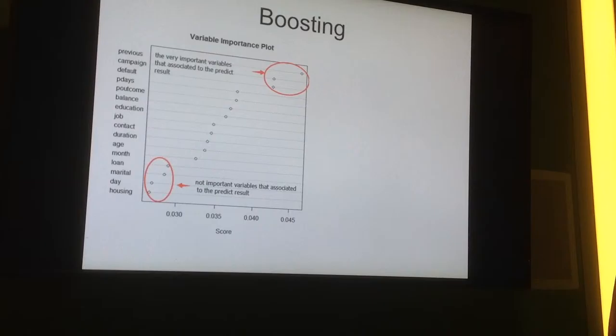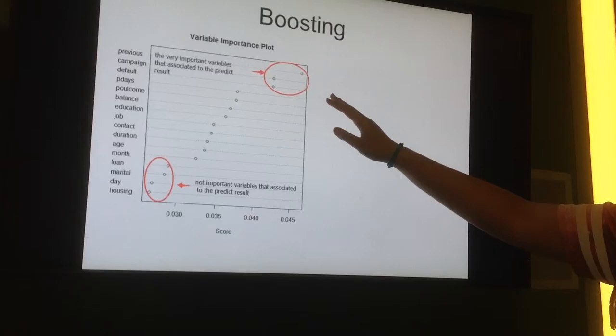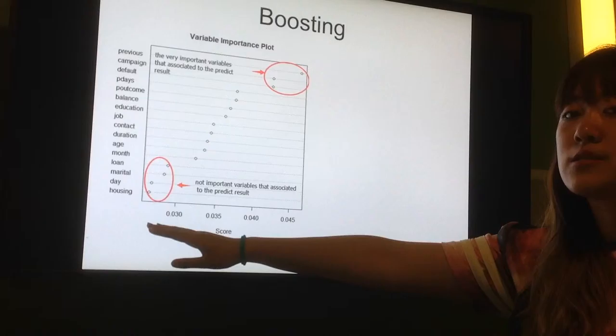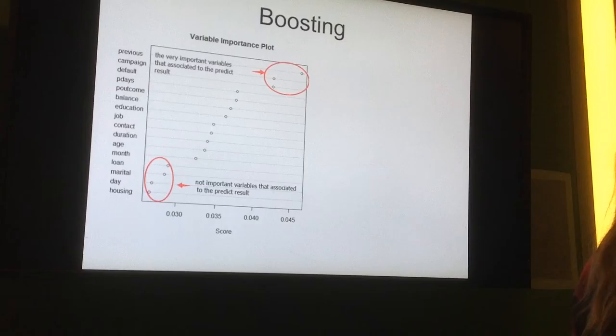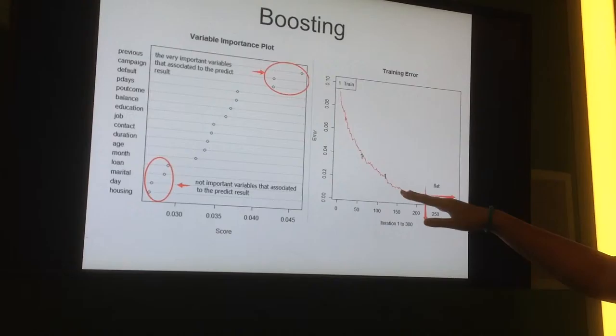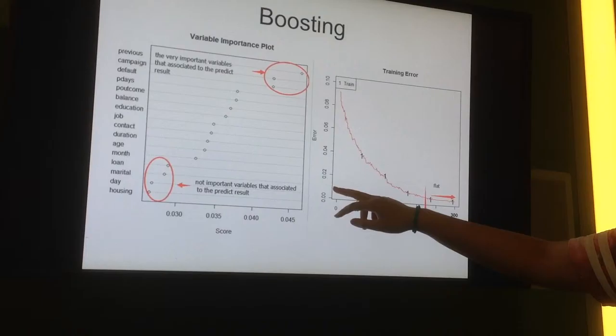For boosting, we can see from variable importance plots, the top variables with the higher score are very important variables to predict the target values. And the variables at the bottom with the lower score present that these attributes may not be very important to predict the target values. From the training errors, we can see after 225 trees, the line is going to very flat and the error is going to a constant number.